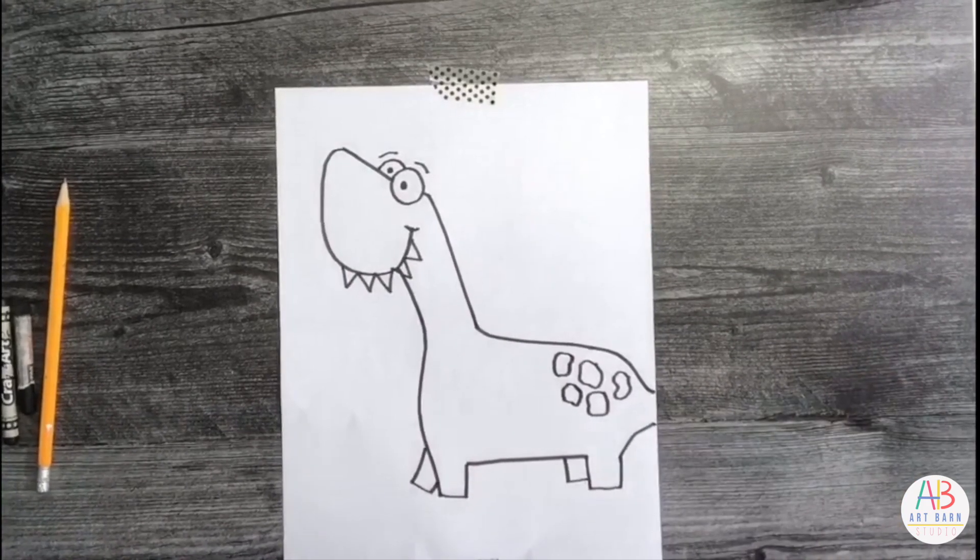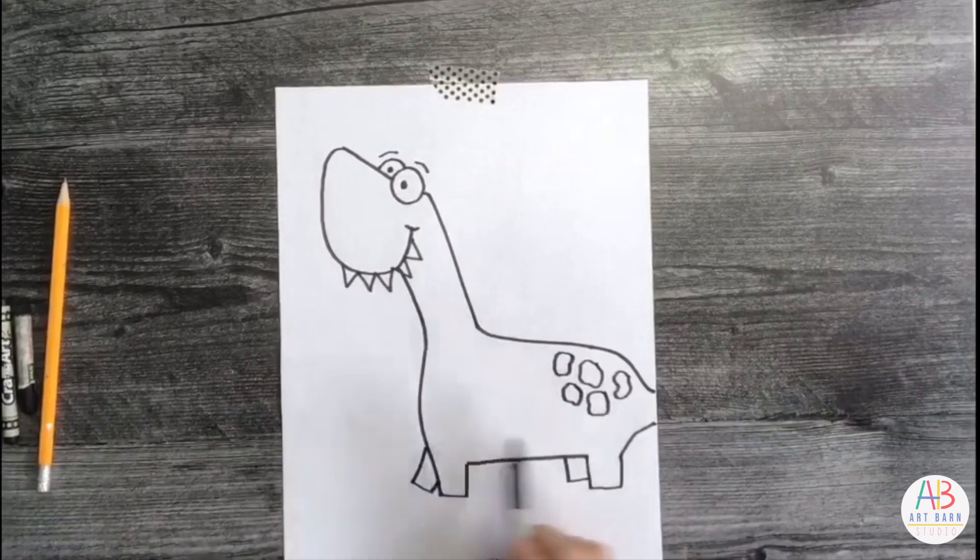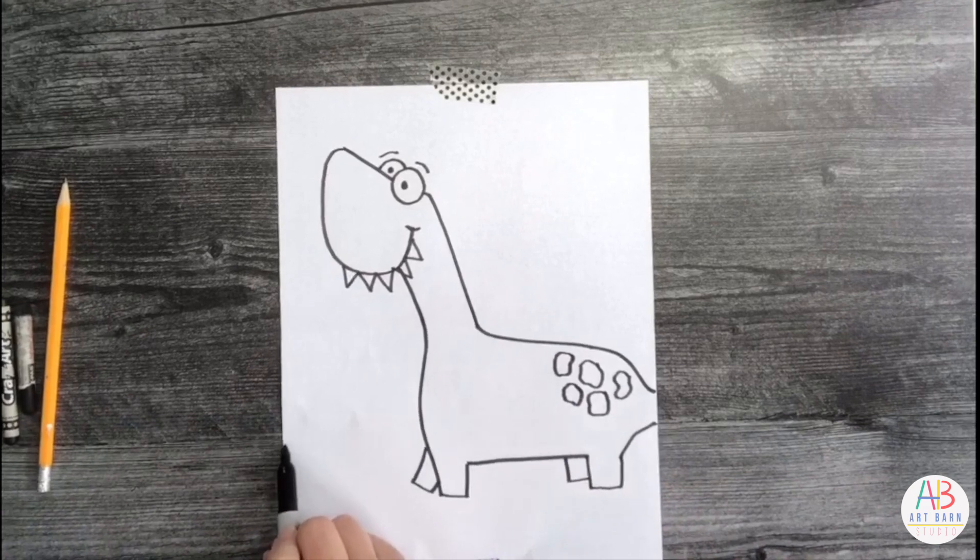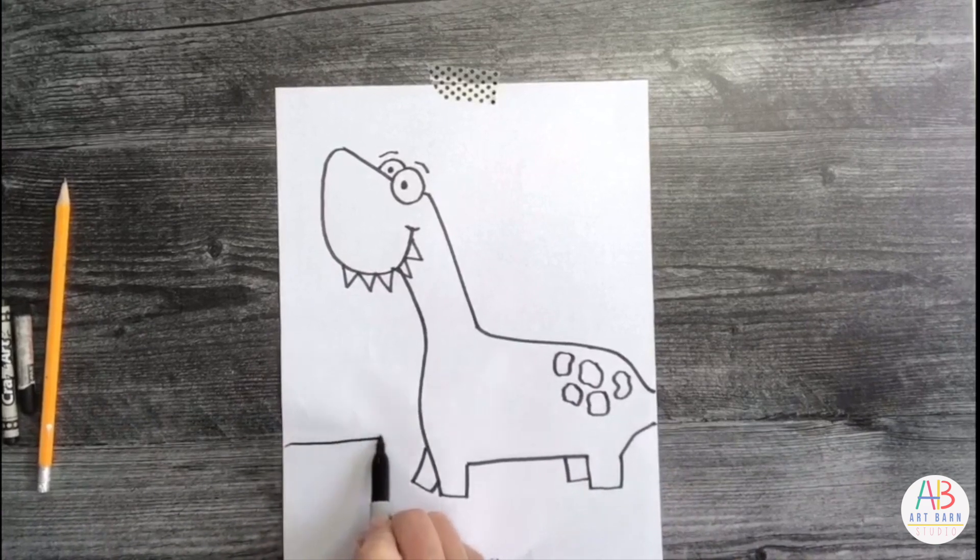So what I didn't add on my drawing page, which you can add here, is maybe a line so it looks like our dinosaur is walking on the ground. So we're going to start on the left side of our paper and then we're going to stop when we hit our dinosaur.